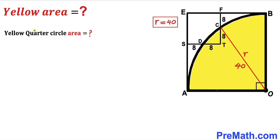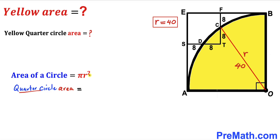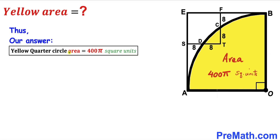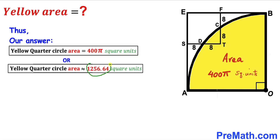For the final step, let's calculate the area of this yellow quarter circle. Recalling the area of a circle formula, area = πr², and since we are dealing with a quarter circle, the area is πr² ÷ 4. Substituting r = 40, we get π × 40² ÷ 4 = 400π square units. This is approximately equal to 1256.64 square units, and that's our final answer. Thanks for watching and please don't forget to subscribe for more exciting videos!